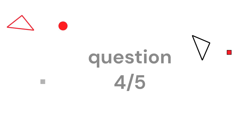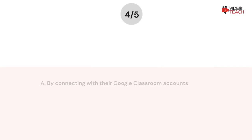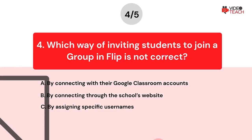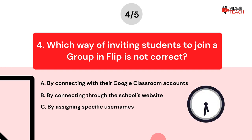Question number four. Which way of inviting students to join a group in FLIP is not correct? Option A: By connecting with their Google Classroom accounts. Option B: By connecting through the school's website. Option C: By assigning specific usernames. Now you have about 15 seconds to think about your answer.